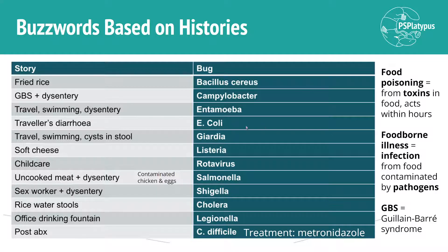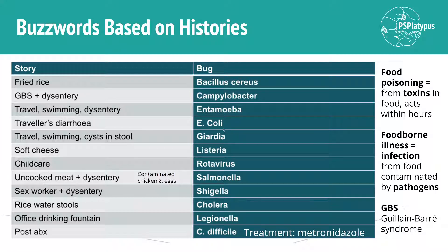We've got amoebiasis. We've got traveler's diarrhea with that classic E. coli. All of these buzzwords are very useful because there are a bunch of question scenarios you'll see. For example, a patient comes in, they've been eating a lot of soft cheese, and now they have a gut infection — that might be due to listeria. That also has a risk for pregnant people to the fetus, which is why you can't have soft cheeses when you're pregnant. Get familiar with these buzzwords because they're great for multiple choice questions.